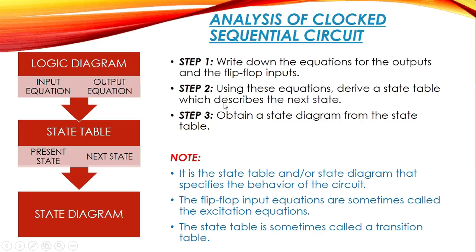The second step is to derive a state table using these equations. The state table describes the next state. In the state table we have present state and next state. The present state is the current state of the flip-flops, and the next state is given by the equations derived from the circuit diagram. The third and final step is obtaining the state diagram from the state table.